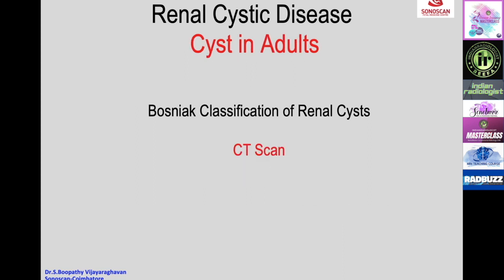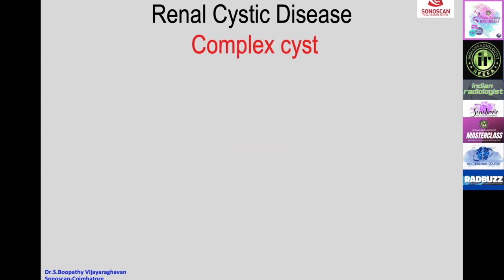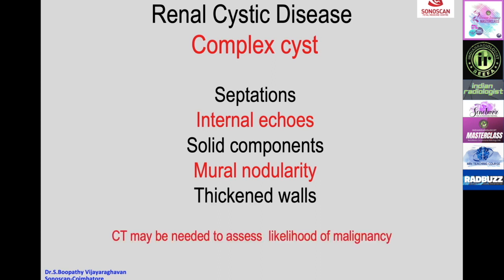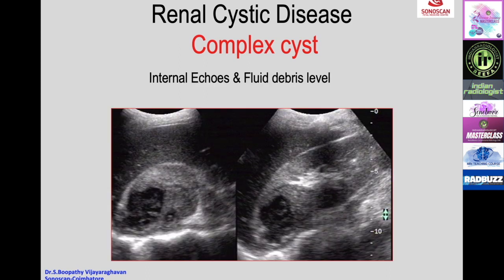Regarding cysts in adults, the Bosniak classification of renal cysts is based on CT scan and is not applicable to ultrasound. On ultrasound, one looks for whether a cyst is simple or complex. Characteristics of complex cysts include septations, internal echoes, solid component, mural nodularity, or thickened walls. When these features are seen, CT may be needed to assess the likelihood of malignancy.